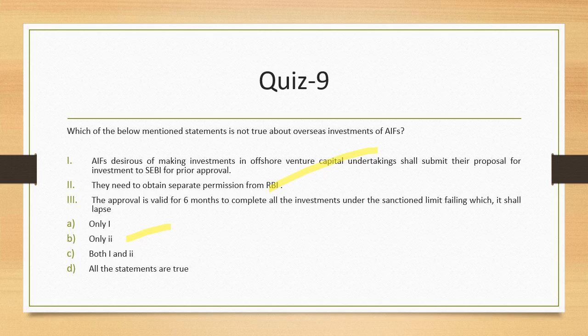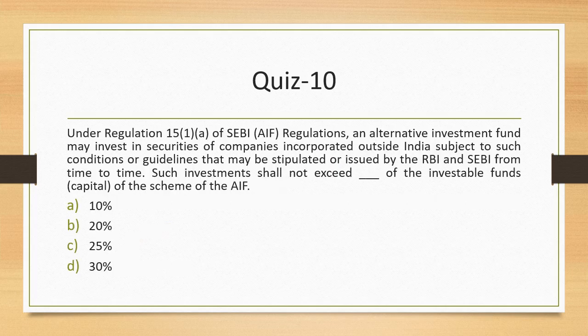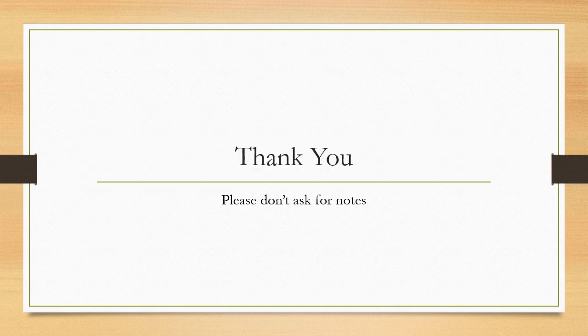Question 10: Under Regulation 15(1)(a) of SEBI regulations, an Alternative Investment Fund may invest in securities of companies incorporated outside India, subject to conditions stipulated by RBI and SEBI from time to time. Such investment shall not exceed what percentage? The answer is 25% — not 10%, not 20%, not 30%. That completes all 10 questions for this video.